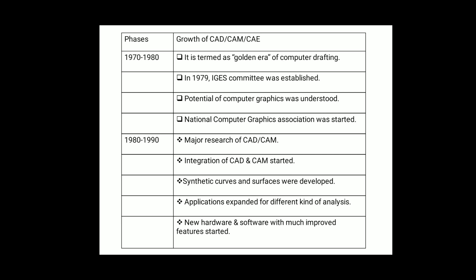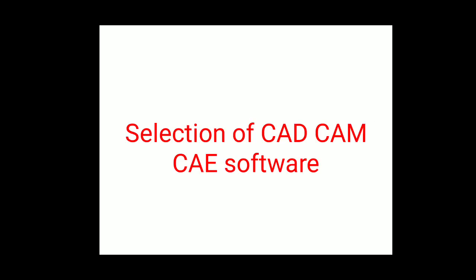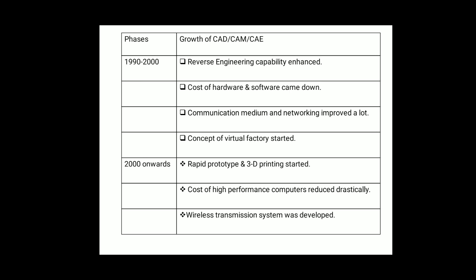In 1970–80, the golden era of computer drafting came. IGES was developed in 1979 and the National Computer Graphics Association was started. In 1980–90, major research in CAD/CAM occurred, integration of CAD/CAM started, synthetic curve surfaces developed, and hardware and software improved. In 1990–2000, reverse engineering was enhanced, hardware/software costs reduced, communication networks improved, and virtual factories started. After 2000, rapid prototyping and 3D printing started, costs of high-performance computers reduced, and wireless transmission was developed.